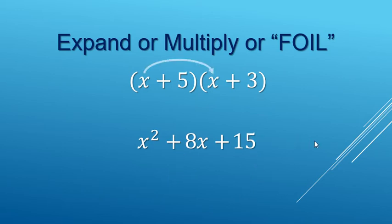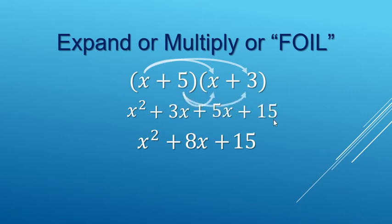Now, why this works, let's look there and actually multiply it out. x times x, the first, x squared. The outers, x times three, three x. The inners, five times x, five x. And the last, five times three, 15.